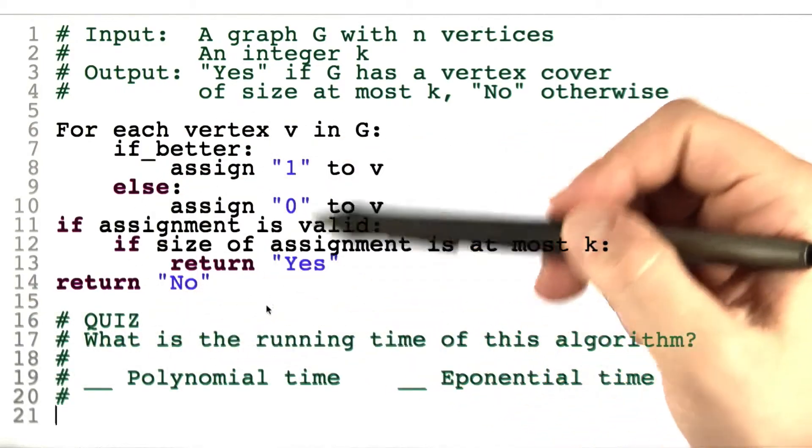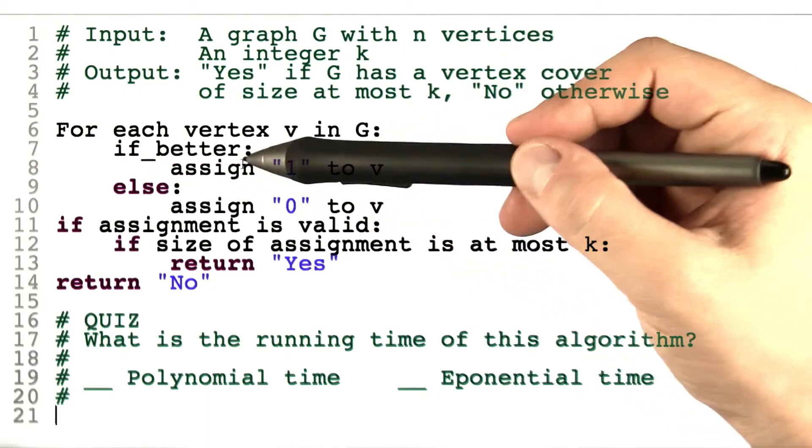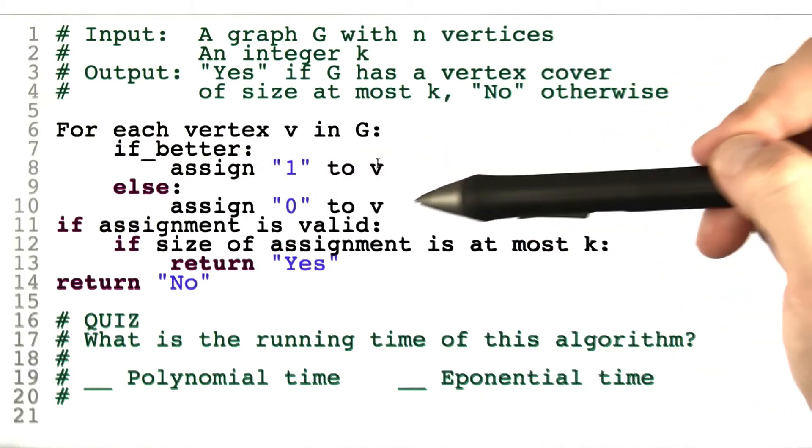So let's do a little quiz. What is the running time of this algorithm for a graph with n vertices, if we can trust the if_better function to perform as specified and guess the best possible assignment of zeros and ones to the vertices?